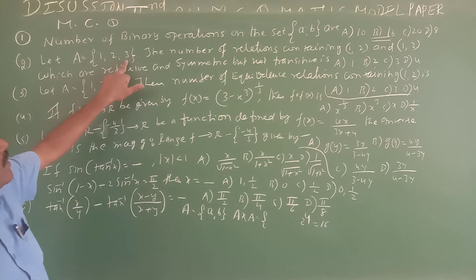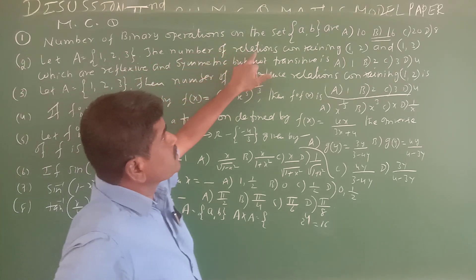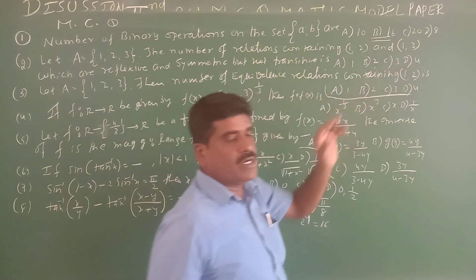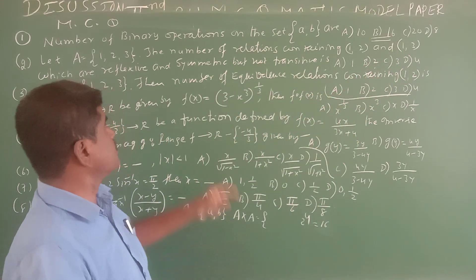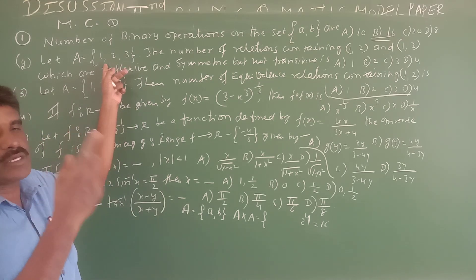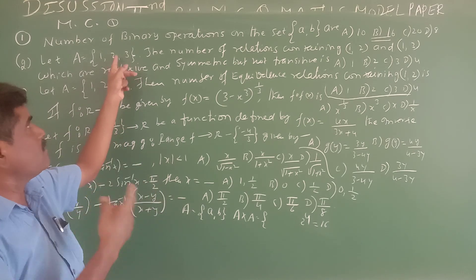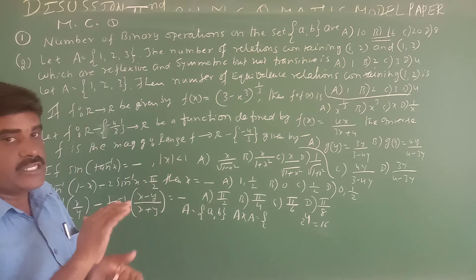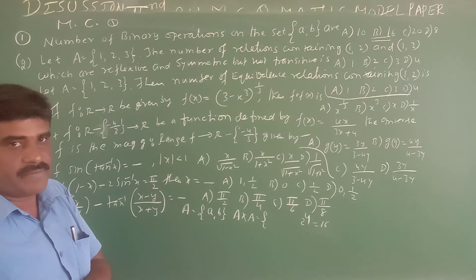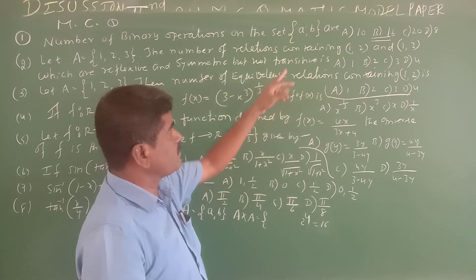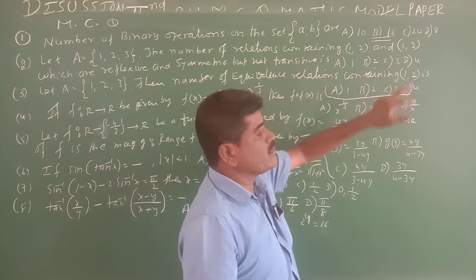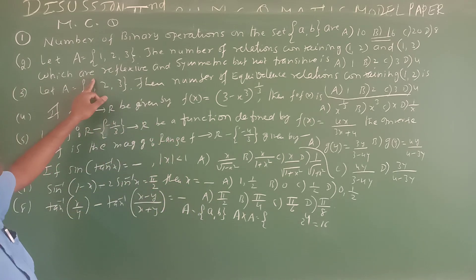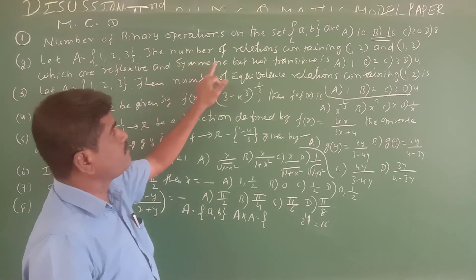Second one: Let set A = {1, 2, 3}. Find the number of relations containing (1,2) and (1,3) which are reflexive and symmetric but not transitive. A×A includes: (1,1), (1,2), (1,3), (2,1), (2,2), (2,3), (3,1), (3,2), (3,3).